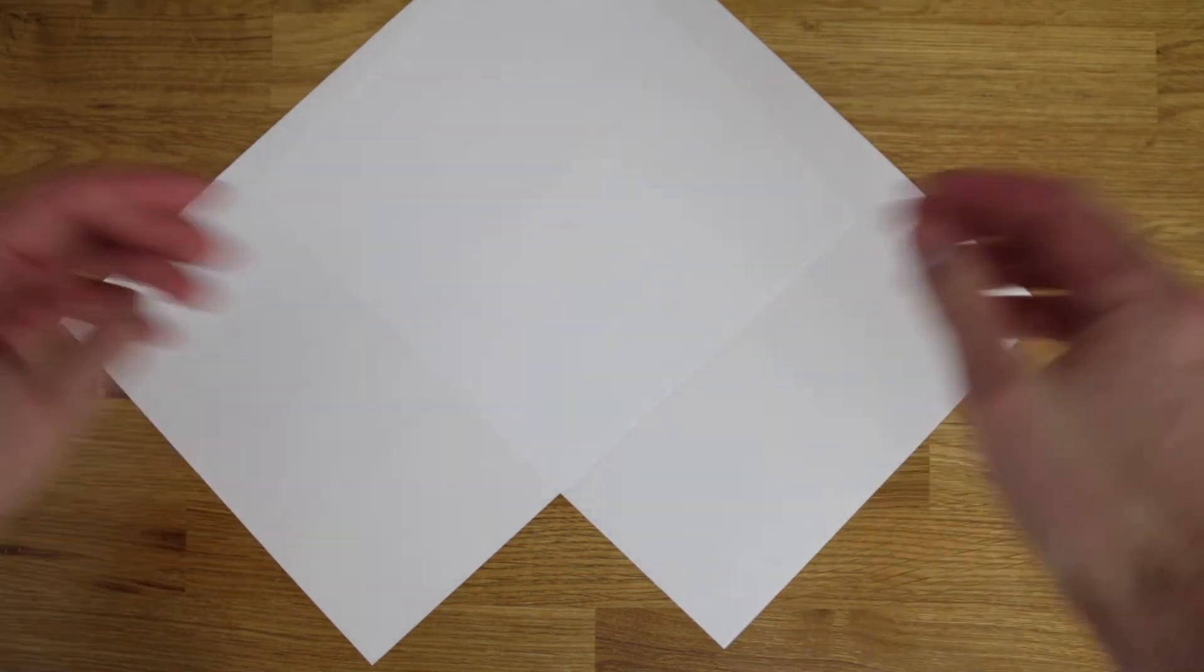Now the rules that we're going to set up is that each piece of paper can only move left or right. That's right, left and right only. Not up and down, not off the desk or anything like that. Left and right.